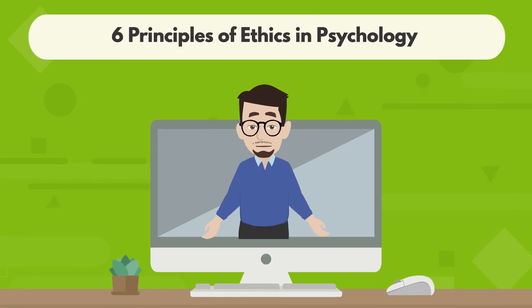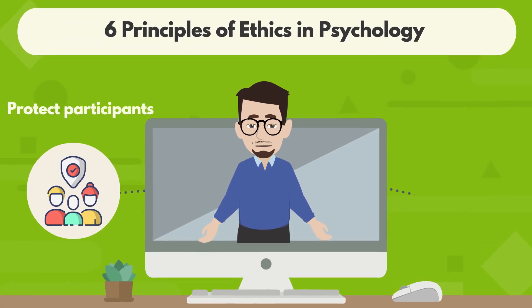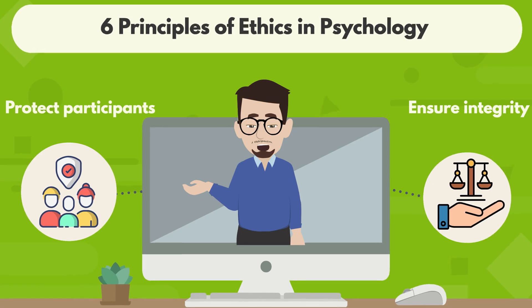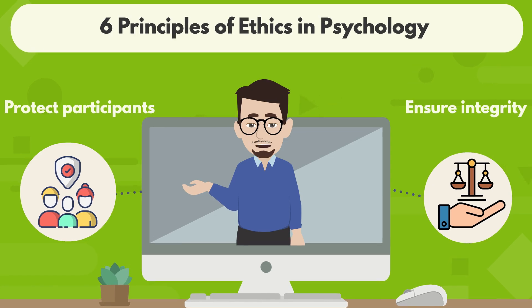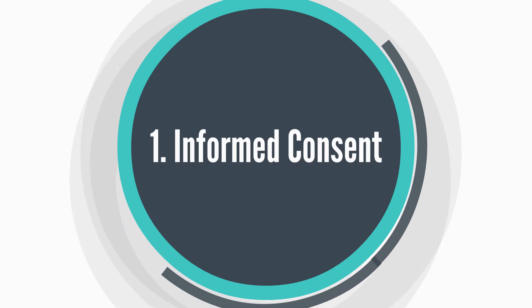The six principles of ethics in psychology are designed to protect participants and ensure integrity in research and practice. Here's a brief explanation of each. 1. Informed consent.